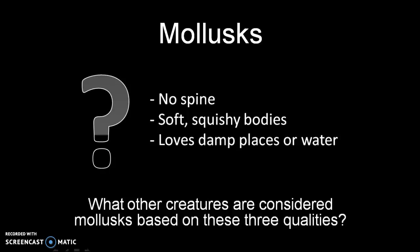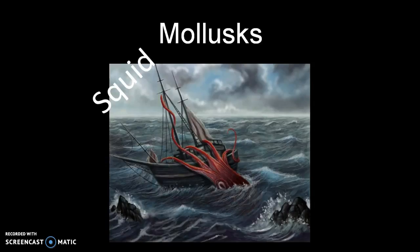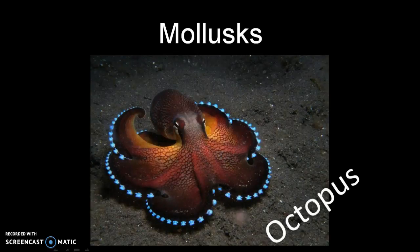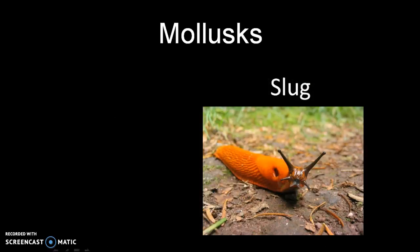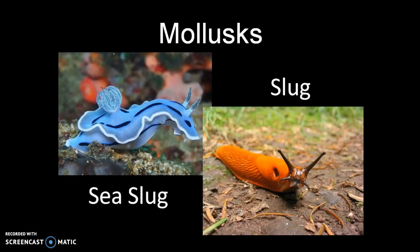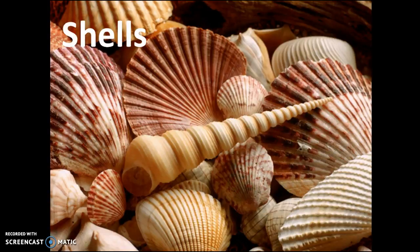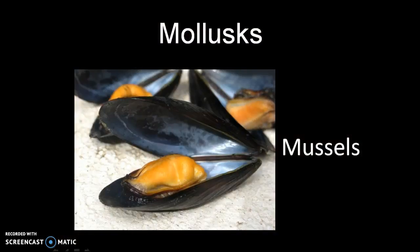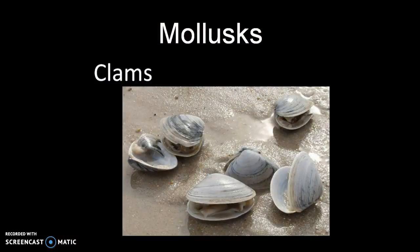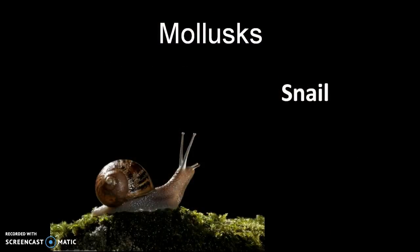Pause the video and discuss the following question. There are some mollusks that don't produce shells, such as squid, octopi, slugs, and perhaps the less familiar but beautiful sea slugs. Then there are shelled mollusks, such as mussels, clams, and snails.